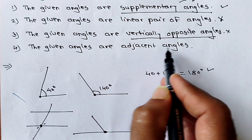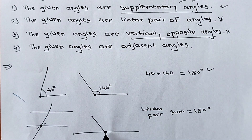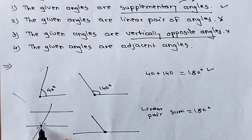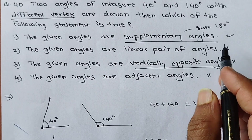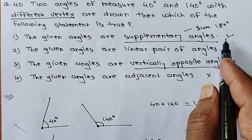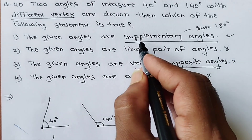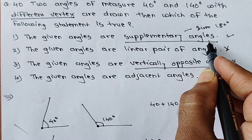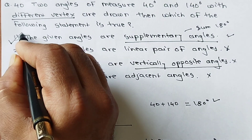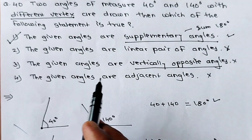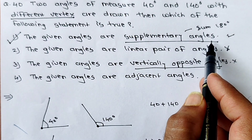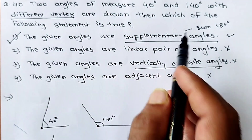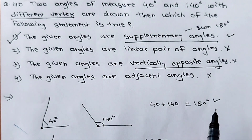Fourth statement: the given angles are adjacent angles. Adjacent angles must have the same vertex — so this is also not satisfied. Therefore only the first option is correct: these angles are supplementary angles. Option 1 is our correct answer.